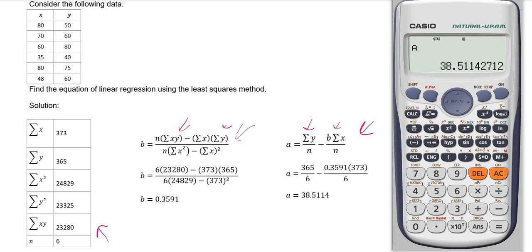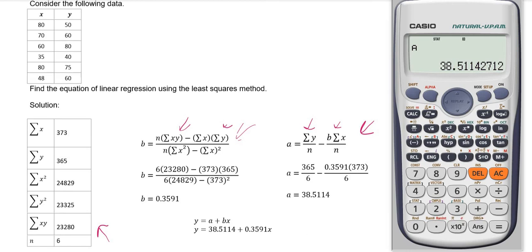The final step is to substitute A and B values into the equation of linear regression. The equation of linear regression is given by Y equals A plus BX. Therefore, the equation of regression is Y equals 38.5114 plus 0.3591X.